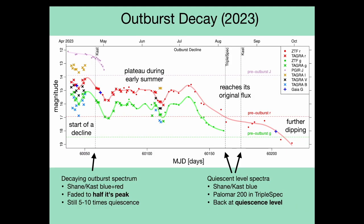Now let's turn to the decay. When the source became observable again in 2023, it was still near its maximum brightness. But by the spring of that year, it had clearly started to fade. This fading took about twice as long as the rise and had multiple temporary dips and a plateau during the late spring and early summer, before reaching its original flux in the late summer. Our co-author Mike Rich got a spectrum from Lick Observatory with the CAST spectrograph just as the source began to fade. At this time, the source had faded by about half, but was still 5 to 10 times brighter than its quiescent flux. Thus, at this stage, the source should still be dominated by the outburst.